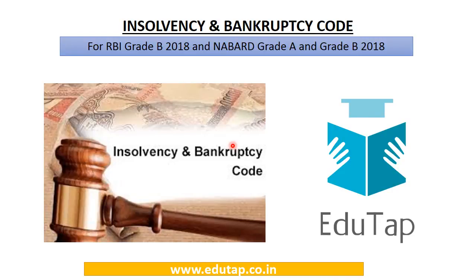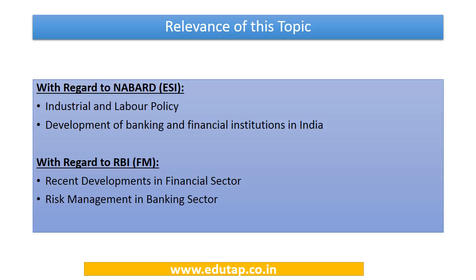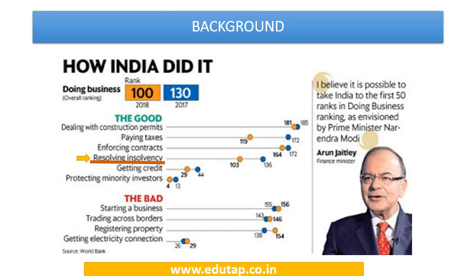In this video we are going to cover a very important topic for our examination which is often hitting the headlines — the Insolvency and Bankruptcy Code 2016. For NABARD, this can be linked to the ASI portion under industrial and labor policy and development of banking and financial institutions in India. For RBI, this can be linked to the FM portion under recent developments in the financial sector and risk management in the banking sector.